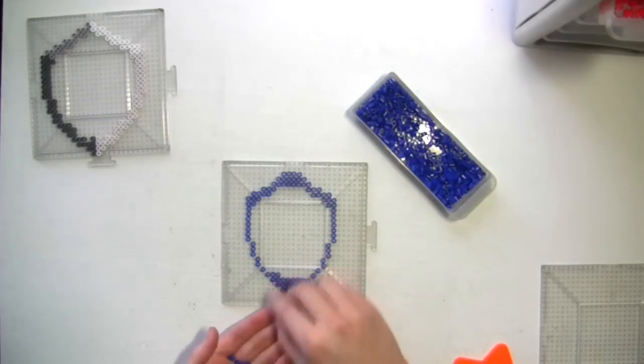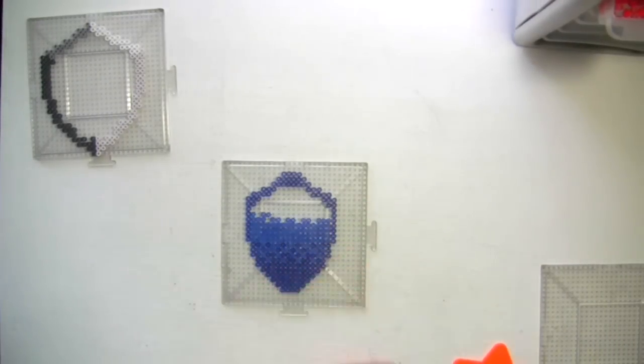Now make the center plate. You'll want this to be at least one row of beads bigger than the frame, so they can overlap.